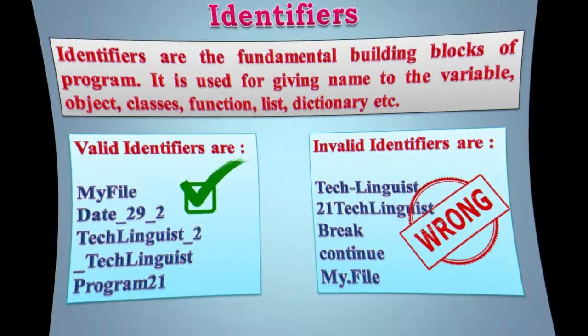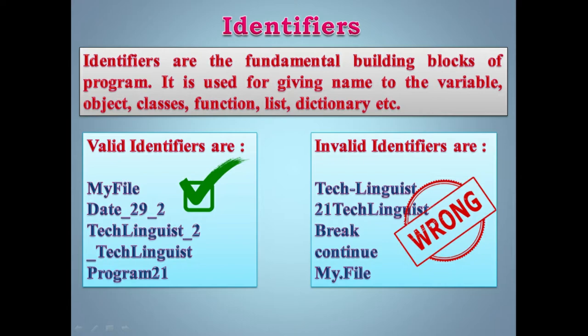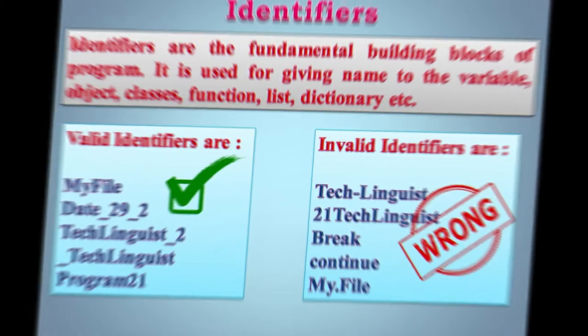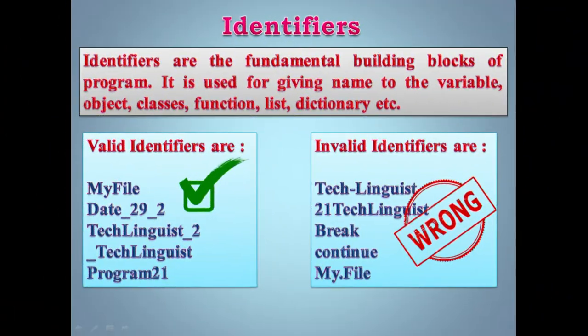Valid aur invalid identifiers kaun se hain, yeh hum log dekhte hain. Identifiers mein hum log small letters, capital letters use kar sakte hain. Special symbols mein sirf underscore hi use kar sakte hain. Numbers use kar sakte hain, lekin uska bhi ek rule hai. Identifier ke rules hain: the first character must be a letter, and underscore counts as a letter.